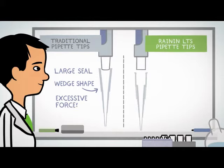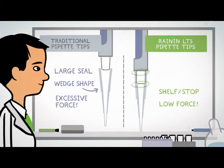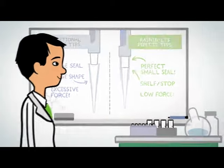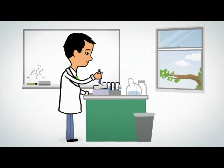But Rainin LTS pipettes and tips are different. The sealing ring and stop work together to prevent you from using excessive force and make a perfect seal every time. They're as easy to eject as they are to put on.